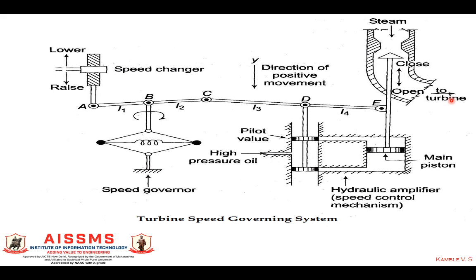So this is the actual working of ALFC. Due to load conditions, if the generator speed decreases or increases, that change is sensed by the flyball mechanism. According to the speed change, the flyball moves inward or outward, and the linkage mechanism operates accordingly, moving the steam valve in the closure or open direction. This controls the steam flow, which controls the speed of the generator — that is, the active power is controlled, and when active power is controlled, it controls the frequency. Thank you.